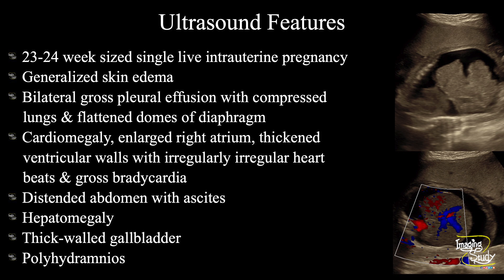In summary: a 23 to 24 week sized single live intrauterine pregnancy was seen. There was fetal generalized skin edema, bilateral gross pleural effusion with compressed lungs and flattened diaphragmatic domes. The heart was enlarged with enlarged right atrium, thickened ventricular walls, irregularly irregular cardiac pulsation, and gross fetal bradycardia at the end of the scan. There was a distended abdomen with ascites, hepatomegaly, thickened gallbladder wall, and polyhydramnios. Combining all these features, this is a case of fetal hydrops with cardiac failure.